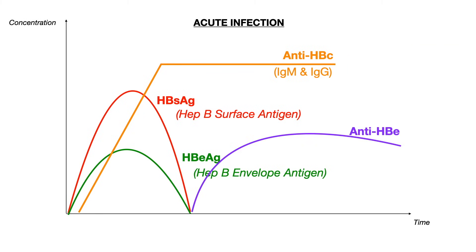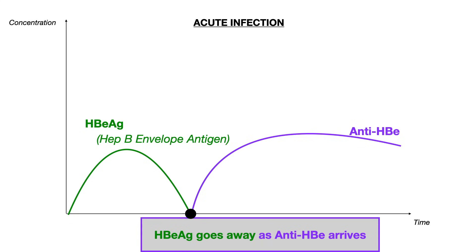The next thing that you see is the antibody anti-HBE. I want to pause and look at just the E antigen and the E antibody. The E antigen or envelope antigen goes away as the body makes anti-HBE. The way you could conceptualize this is that the antibody against the envelope knocks out the envelope antigen. So when you're looking at a graph of serology, think of it this way: the antibody takes away the antigen.